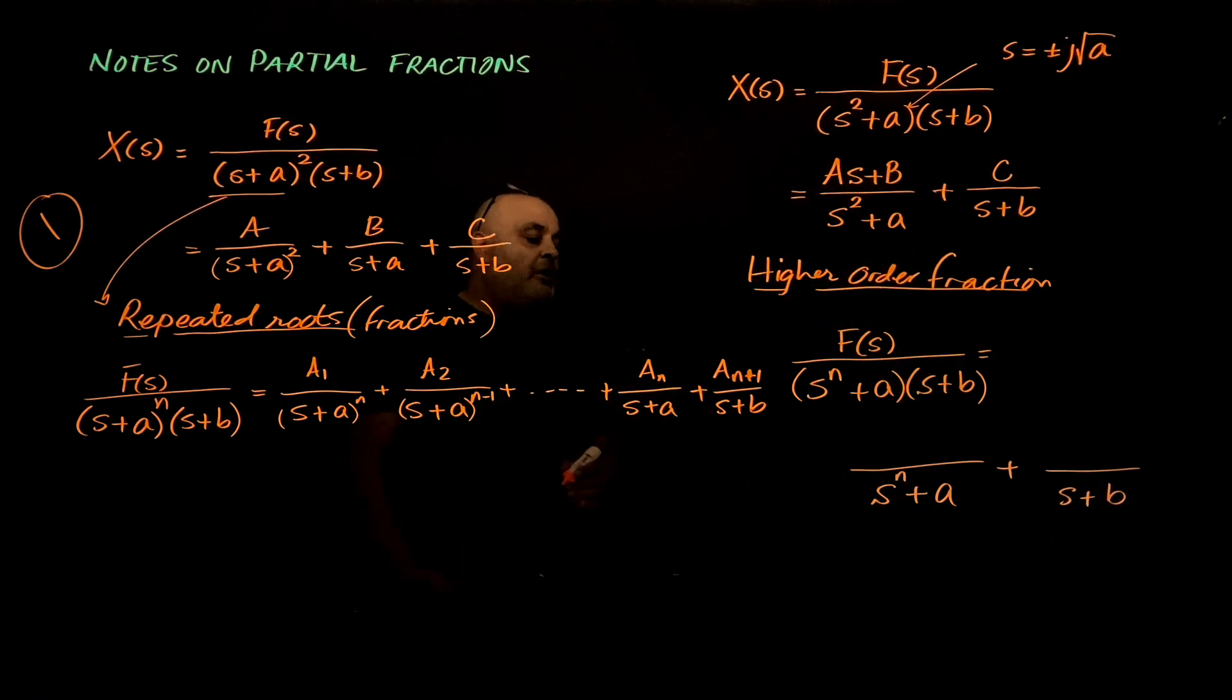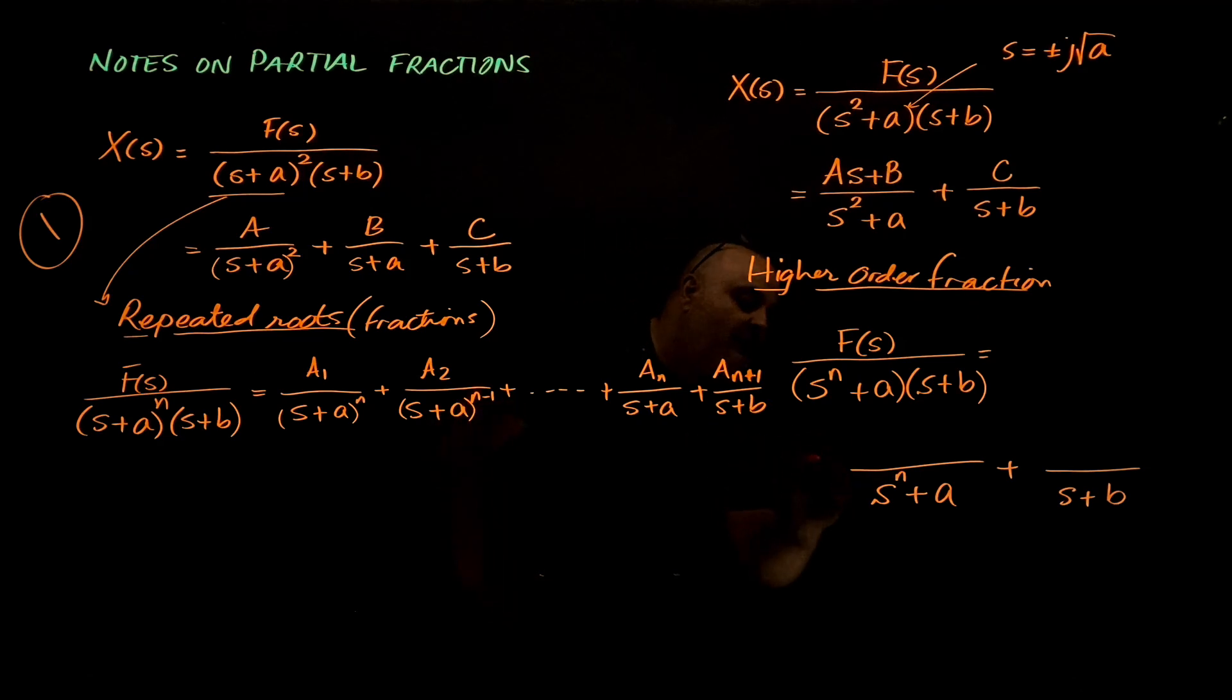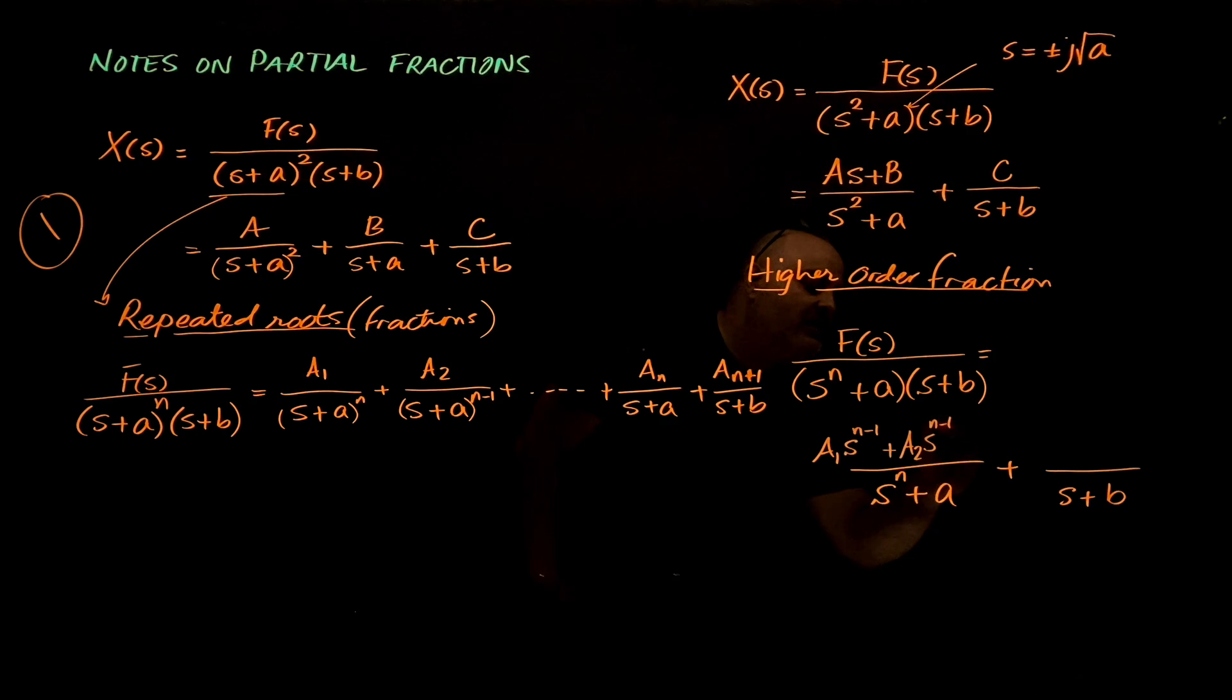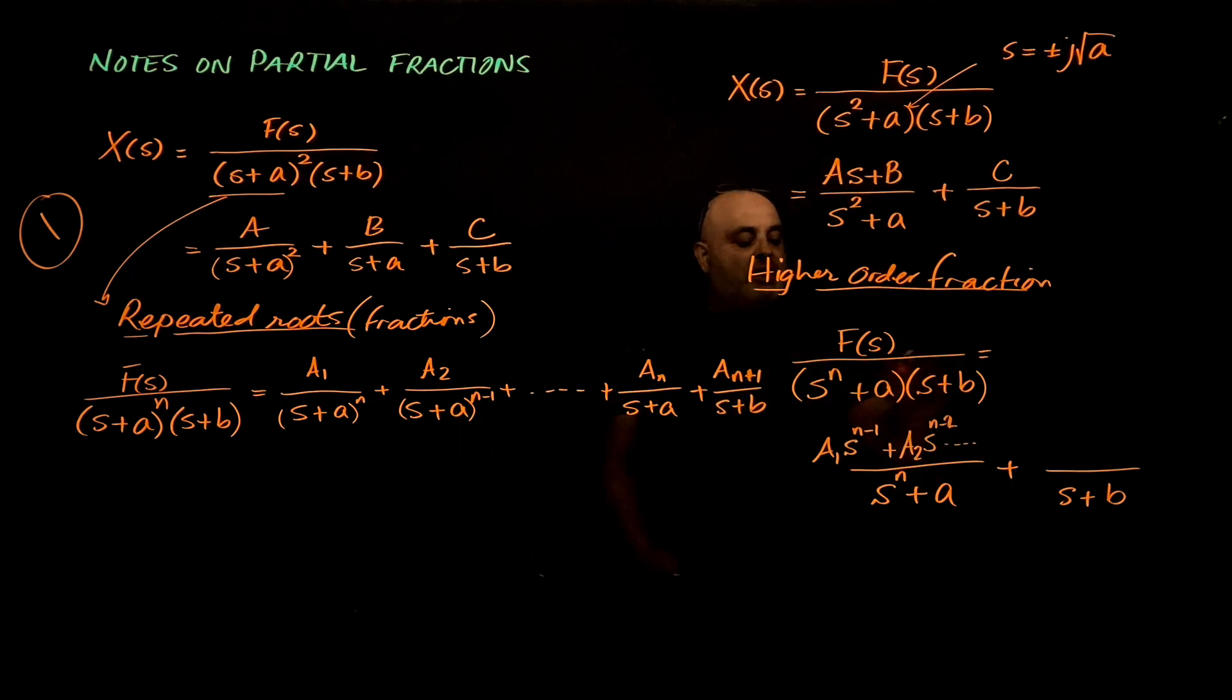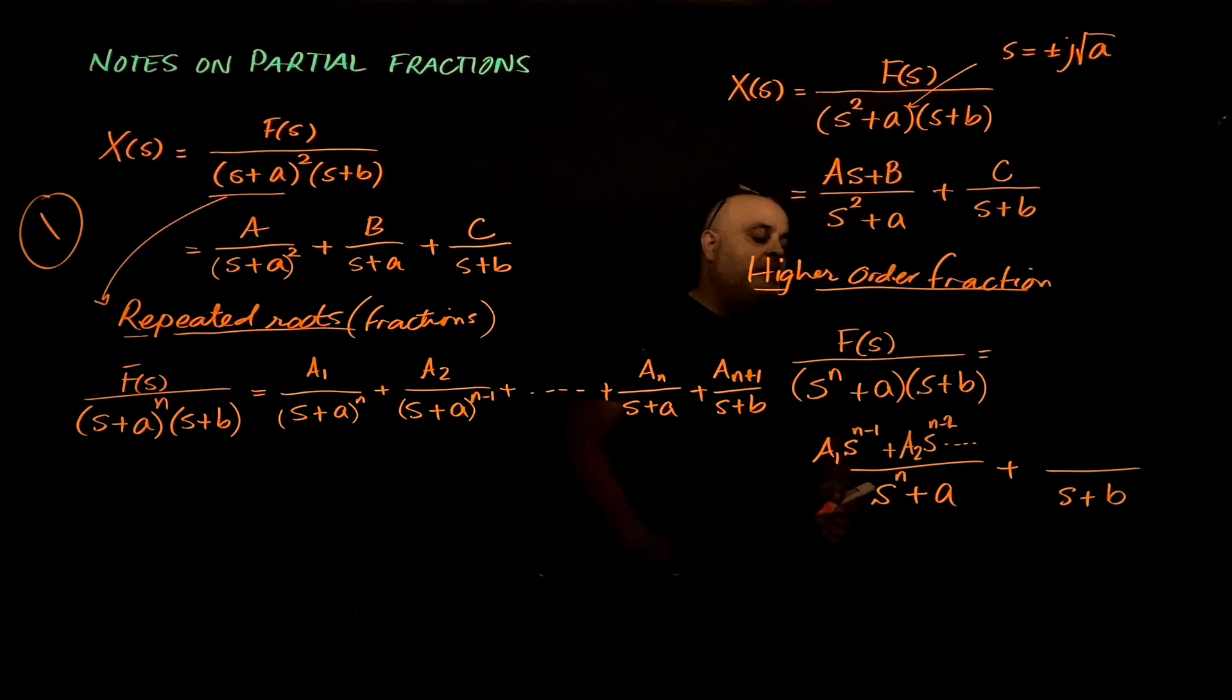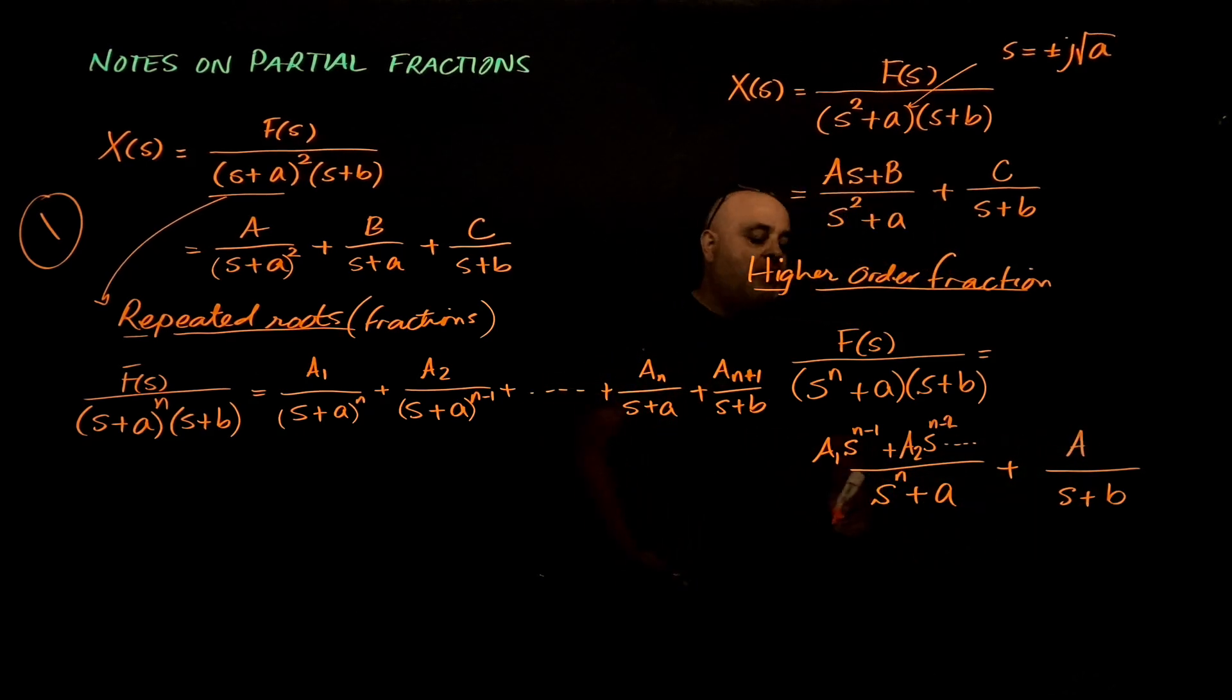One order less than the denominator. The denominator order is n, so I will have a1, some constant, times s power n minus 1, plus a2 times s, n minus 2. And, keep going until I reach a constant number. Reduce the orders of s until we get to order s^0, which is 1. And, here I will have a power a sub n+1.